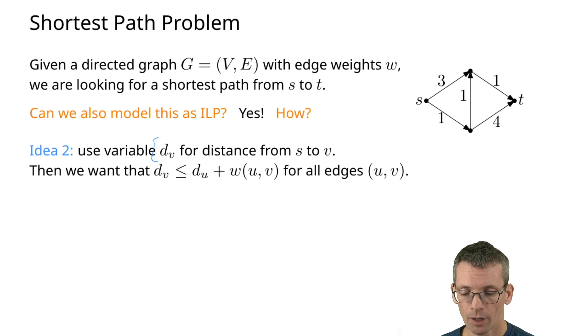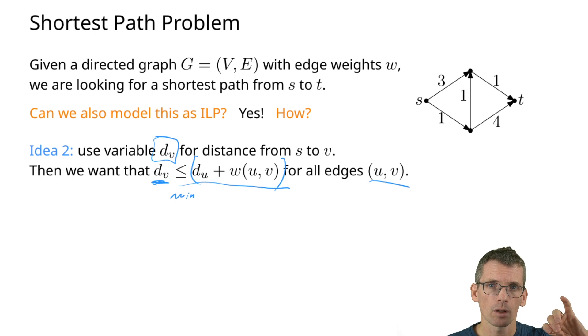For every vertex I have a variable, and what I want this variable to be is the distance from s to that vertex. To achieve this, we will have the following constraints: for this vertex d_v, we will have constraints for every edge going into v that d_v is smaller or equal to d_u plus w_uv. The idea here is: in principle, what we would like to have is that d_v is the minimum of all of these values, but minimum is not a linear constraint, so we cannot do that. We can only do smaller or equal. If we would now be able to pick d_v subject to these constraints as large as possible, then we would actually get the right value, namely the minimum.